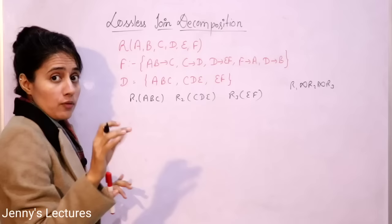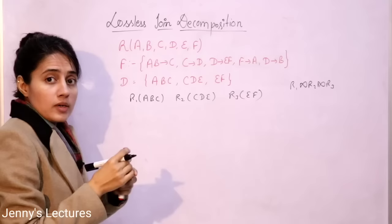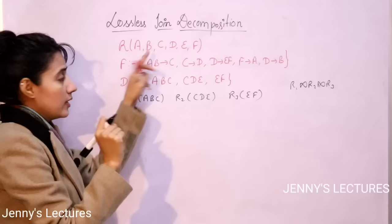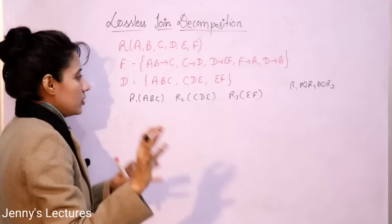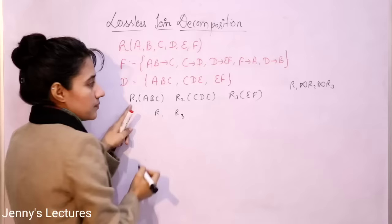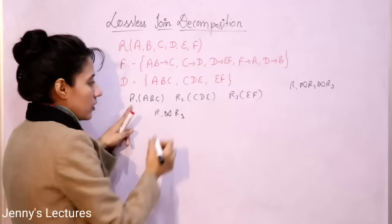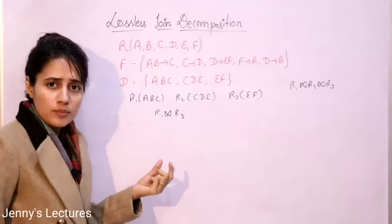To check whether this decomposition is lossless, we verify three properties. First, the union of attributes of all decomposed sub-relations must equal the attributes of the original relation. Taking the union gives A, B, C, D, E, F — yes, we get all attributes. Next, take two sub-relations. Suppose we first take R1 and R3 and check if they have any common attribute for natural join.